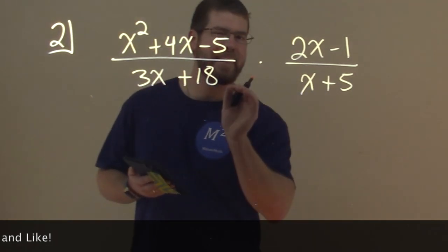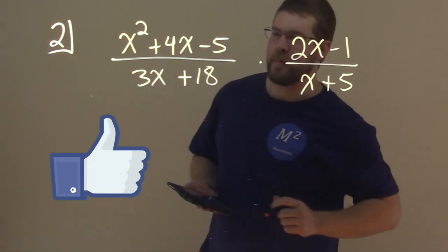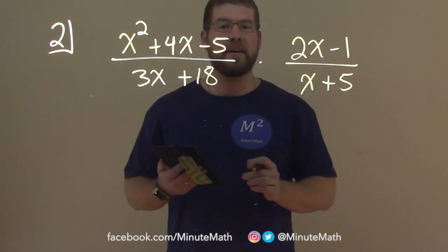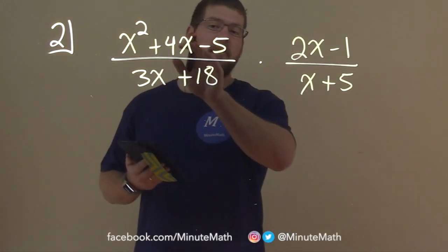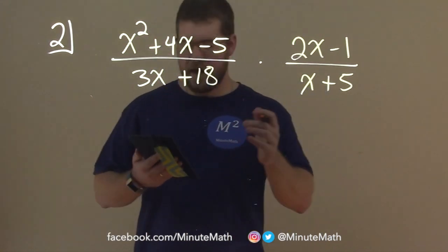The secret to solving or simplifying this rational expression is to smash that like button. It helps us make more videos. Okay, the real secret here is factoring. We want to factor the numerator and denominator of each one if we can, simplifying that out.